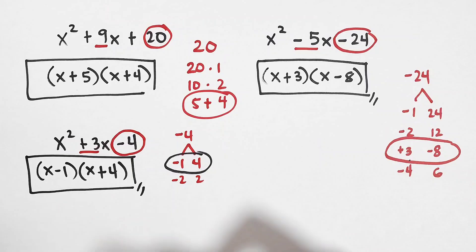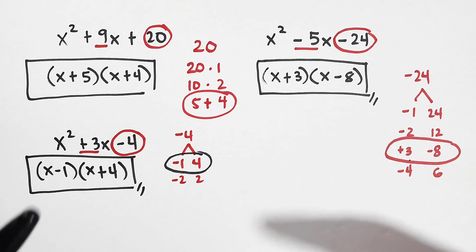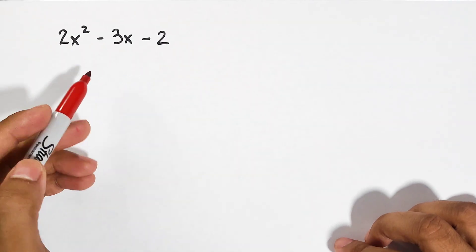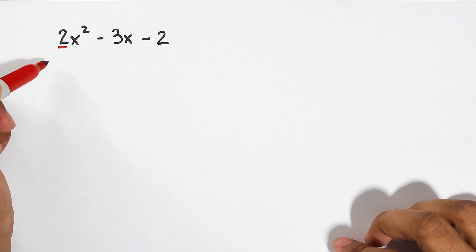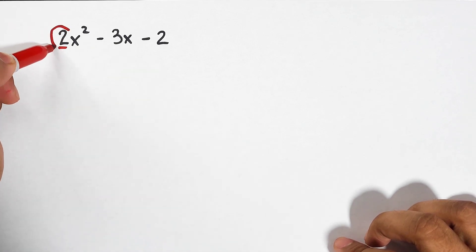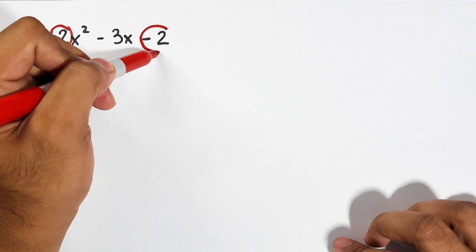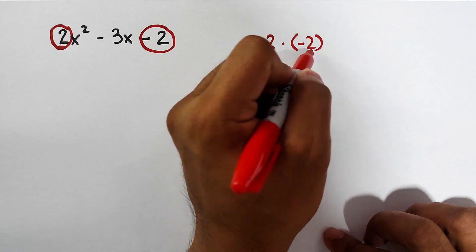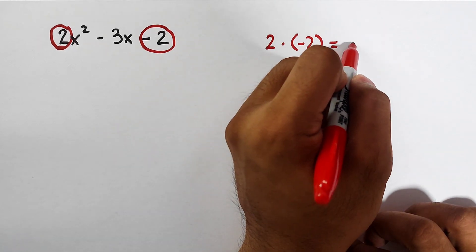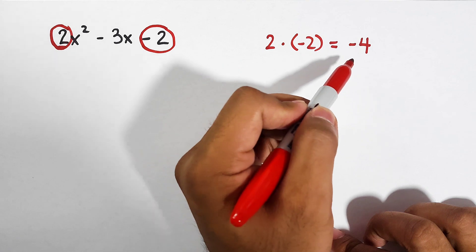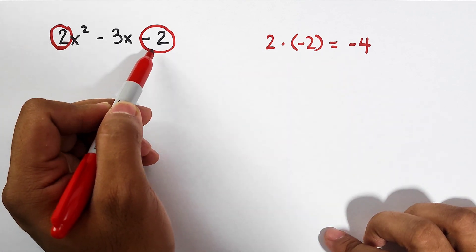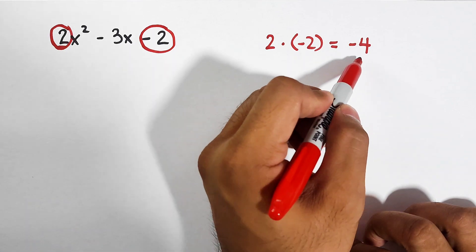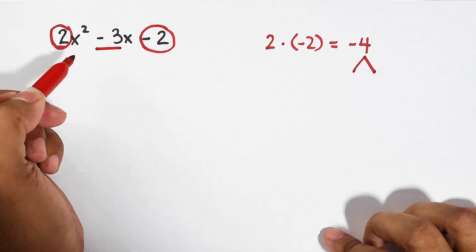In the next part, I will give you quadratic trinomials in which the coefficient is greater than 1. How are we going to factor out a trinomial where the value of a is greater than 1? This is called the daisy method. First, we multiply the coefficient of the leading term, which is 2, by its constant. So we have 2 times negative 2, which gives negative 4. Then we think of the factors of negative 4 that will add up to negative 3.